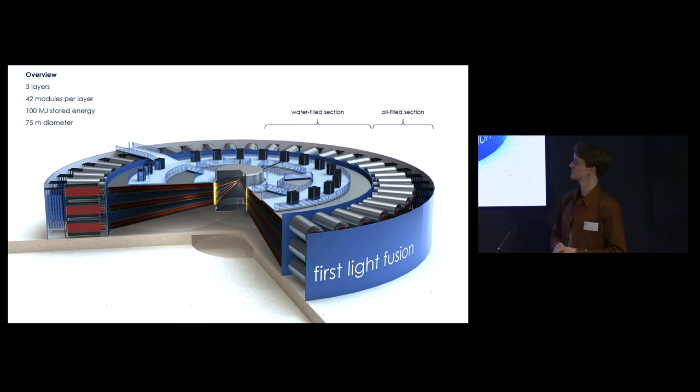It's the largest pulsed power machine in the world. We want to keep the core pulsed power as close to the Z machine as possible. The machine has three layers - three sets of triplate transmission lines, 42 modules per layer, 126 modules overall. Total stored energy is 100 megajoules. The diameter is 75 meters across. There's an oil-filled section for insulation, then a water-filled central section, then a vacuum chamber in the middle, similar to Sandia's Z machine.